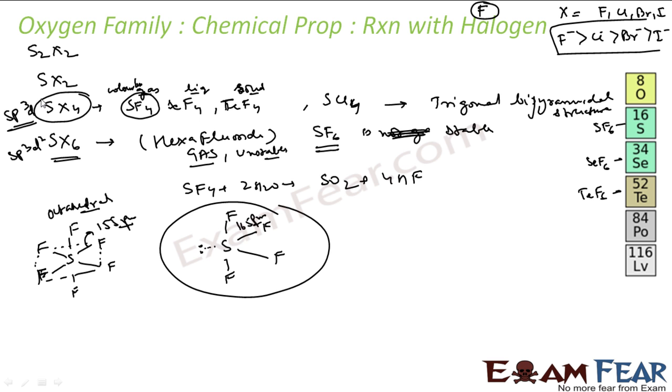Now let's see SX2. The example of SX2 form can be my SF2, SCl2, SBr2. And for S2X2, example can be S2F2, S2Cl2, S2Br2.